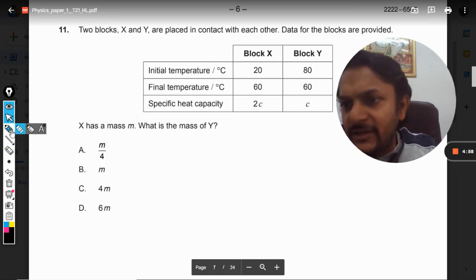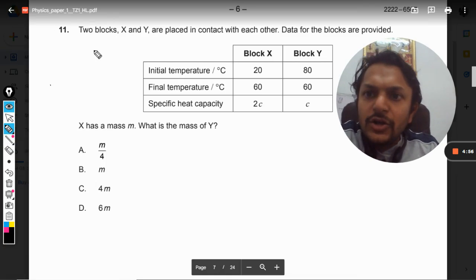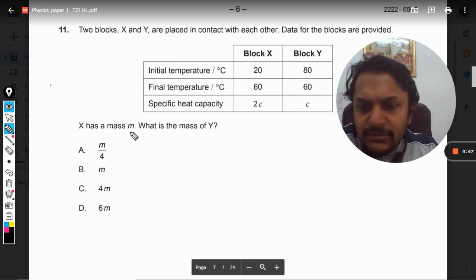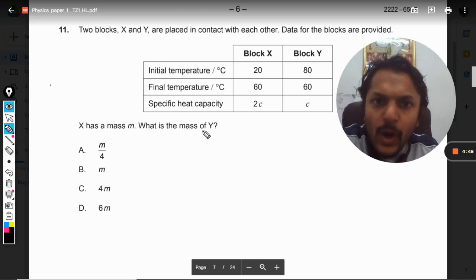Okay dear students, let us see how to do this question. Two blocks X and Y are placed in contact with each other. Data for the blocks are provided. X has a mass M. What is the mass of Y?